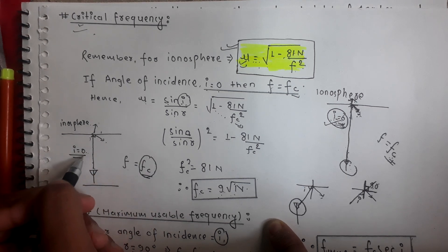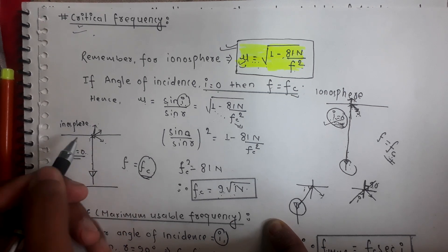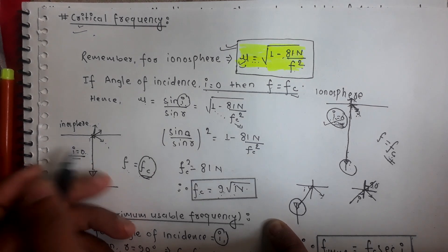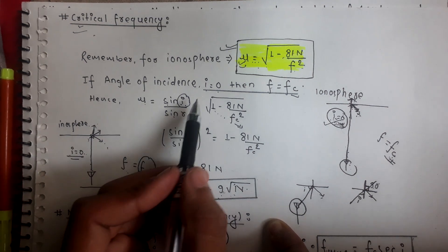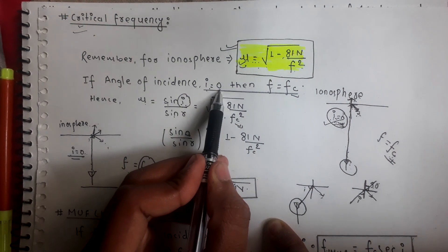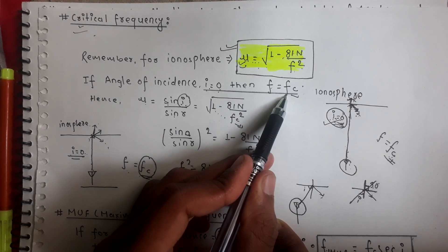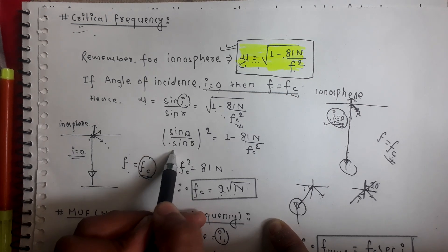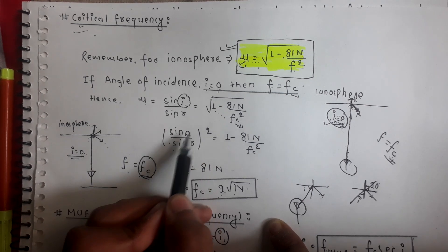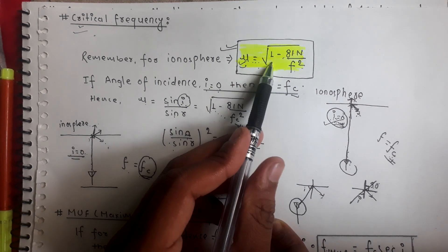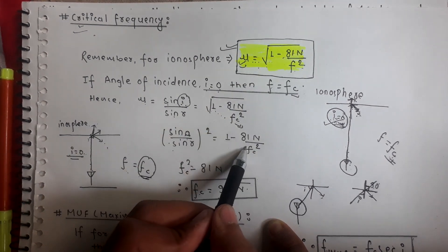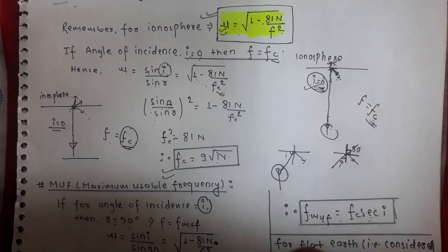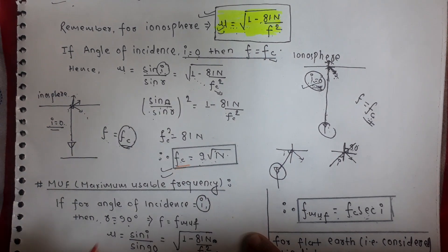For the angle of incidence zero degrees, the frequency that will reflect back to the earth is known as critical frequency. So for angle of incidence zero, F will be FC if the wave reflects back to the earth. Here is the simple mathematics: sin(i)/sin(r), with angle of incidence zero degrees, equated to the refractive index of the ionosphere. Solving this equation, we get the formula for critical frequency FC.